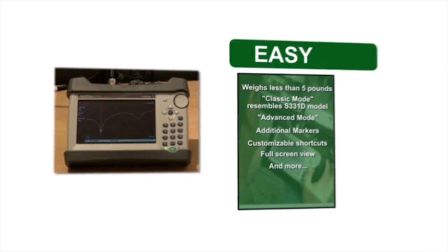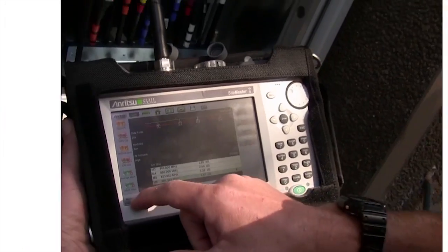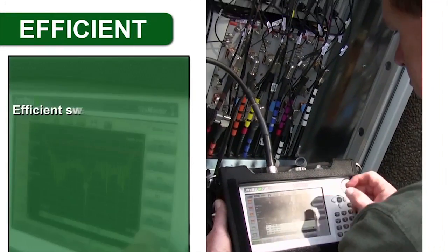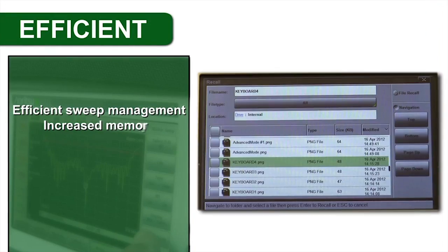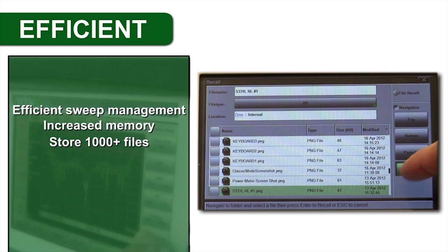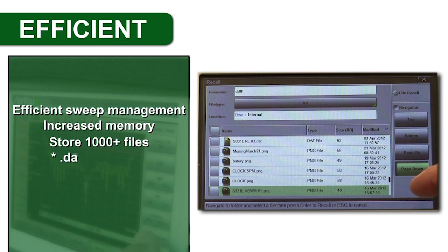And naturally, the SightMaster S331L provides the best tools for efficient sweep management. Increased memory lets you internally store more than 1,000 files, so saving all your sweeps, setups and screenshots is a snap.